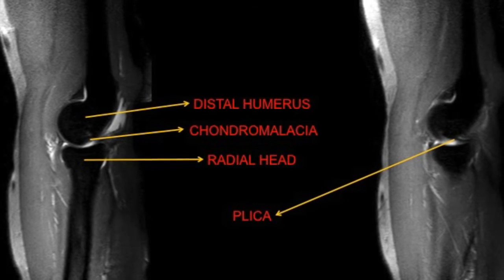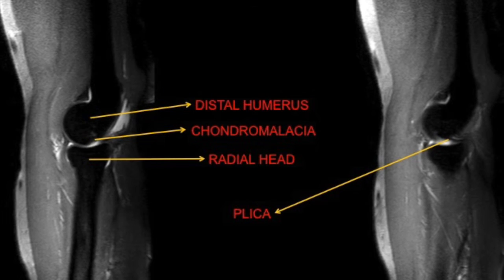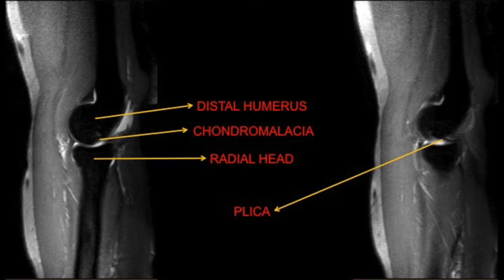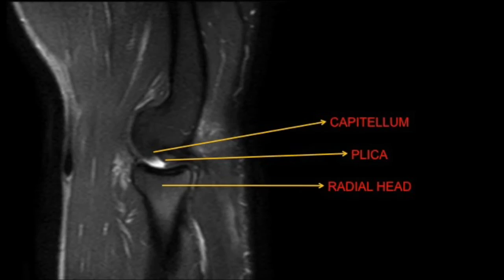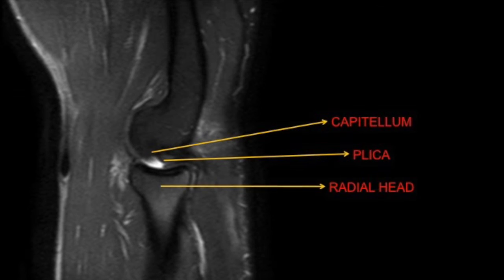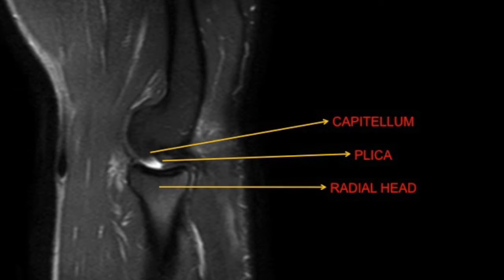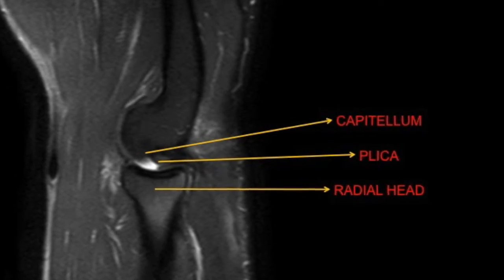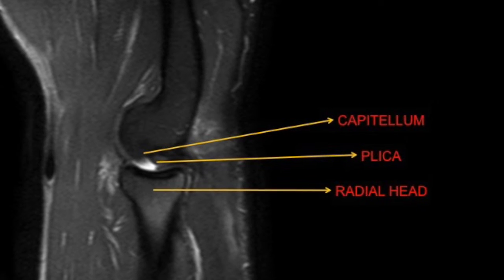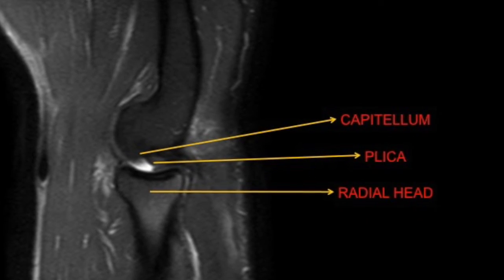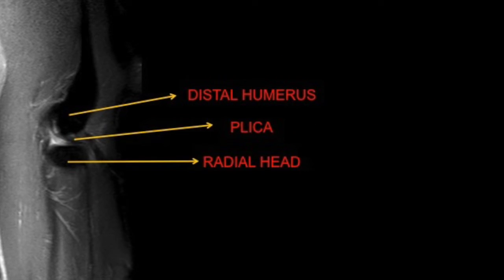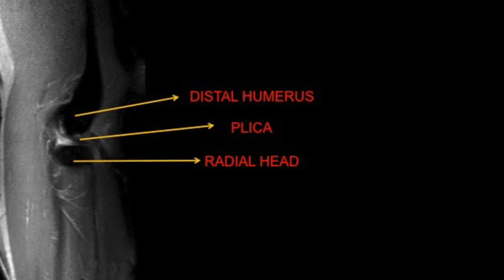Careful review of the MRI revealed a hypointense band in the radiocapitular anterior aspect of the elbow joint. This is what we call a synovial plica, which is nothing but a fold of synovial tissue — a remnant of the embryonic septa of normal articular development.